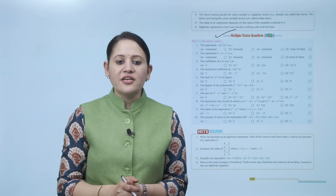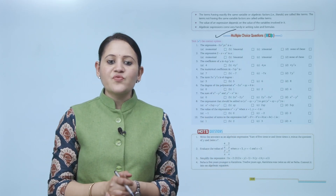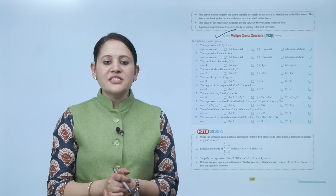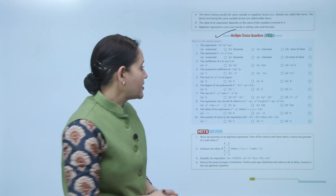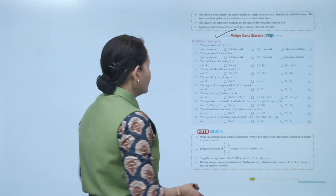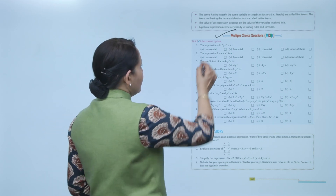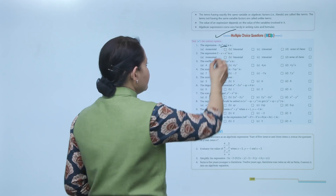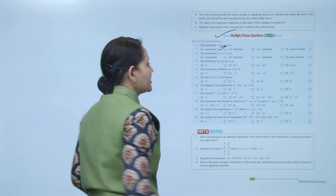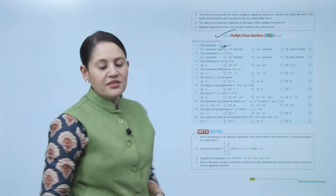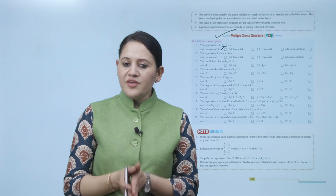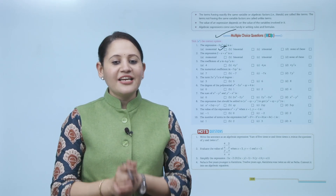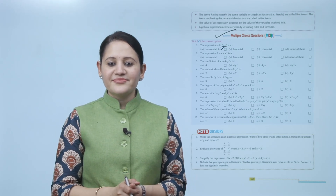Next is multiple choice questions. Take the correct option: the expression −5x²yz² is — since there is only one term, it is a monomial, so option A is the correct answer. Here we end the chapter. I hope you understood the chapter well. Now you have to practice it.